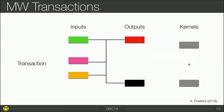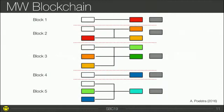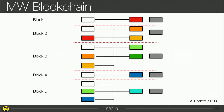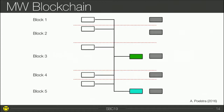We have the same idea for the MimbleWimble blockchain. Every block is basically a huge transaction, because miners take all the transactions, group them, and perform what we call cut-through — removing the spent outputs — then publish this big transaction. When you want to sync the blockchain, you don't have to download every block. You can download just the state of the blockchain, which is all blocks added together with spent outputs removed. You still need to download the block headers, the unspent transaction output set, and the kernel set.